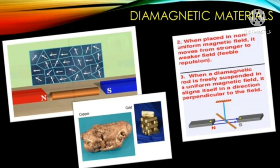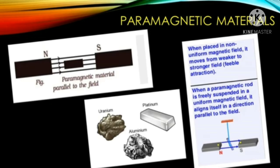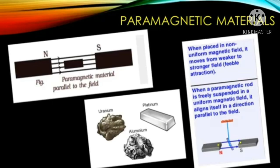The following are the characteristics of paramagnetic materials. When suspended in an external uniform magnetic field, paramagnetic materials will align themselves parallel to the direction of the magnetic field. Paramagnetic materials have a tendency to move from the weaker part to the stronger part when suspended in a non-uniform magnetic field. Paramagnetic materials get magnetized in the direction of the field. Examples of paramagnetic substances are aluminum, platinum, chromium, oxygen, manganese, and solutions of salts of nickel and iron. The magnetic character of paramagnetic substances is affected by external temperature.